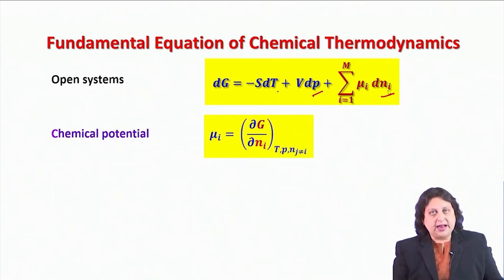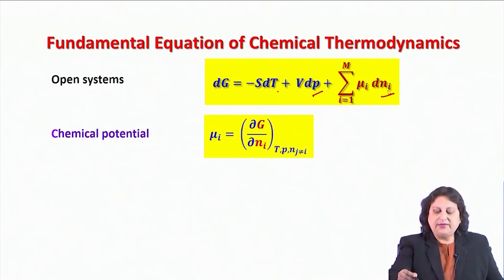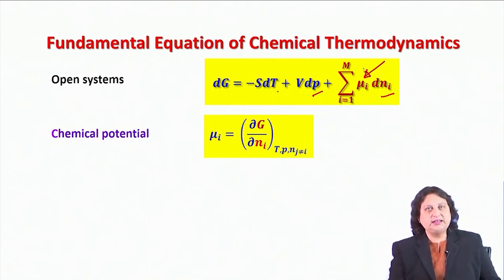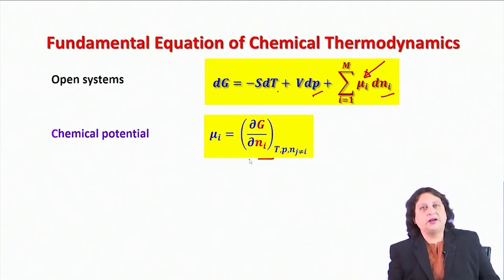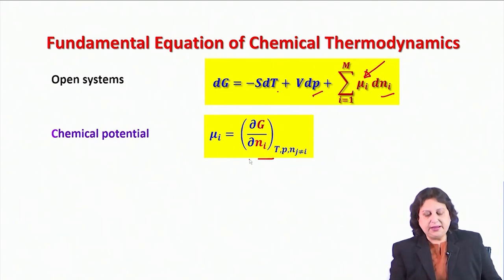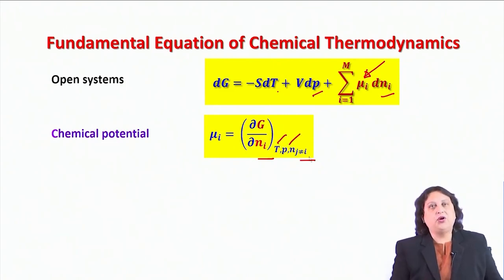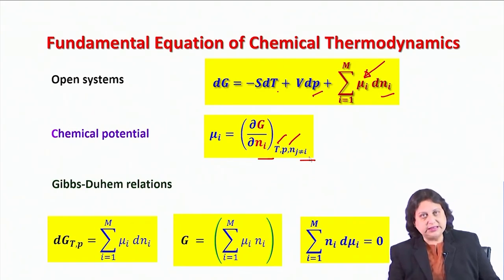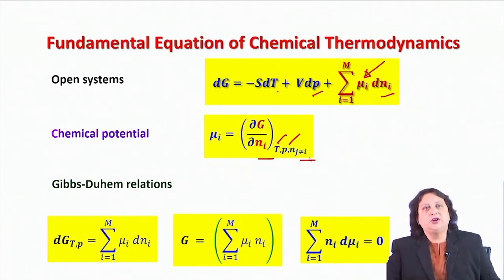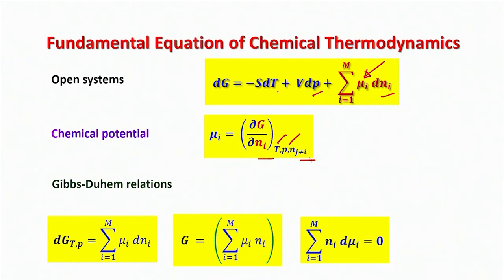In addition to temperature and pressure, we have introduced the chemical potential, which is defined in terms of a partial derivative of G with respect to the number of particles of the ith type, keeping temperature, pressure, and number of all other particles constant. We have also seen that combining this definition with other thermodynamic relations gives us the Gibbs-Duhem relations, and we have seen how these can be used to work out the thermodynamics of an ideal gas mixture.